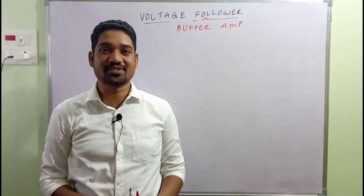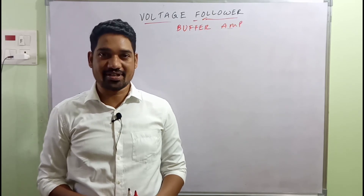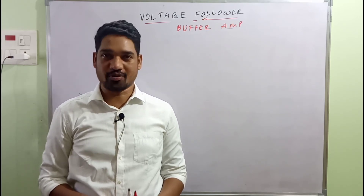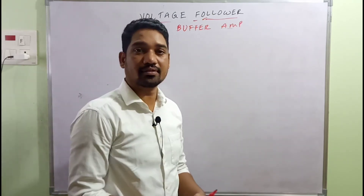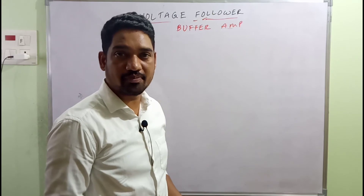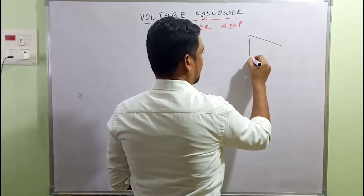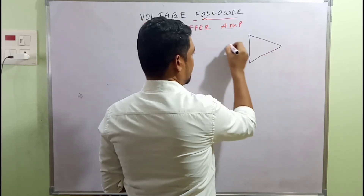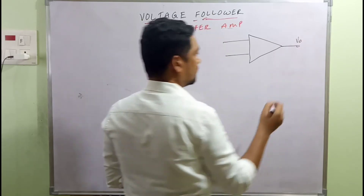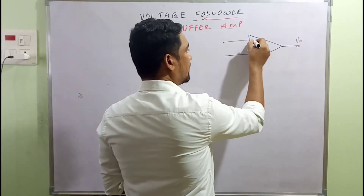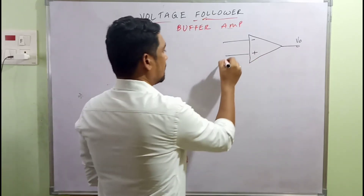Welcome to Shendra's Engineering Tutorials. Today's topic is from operational amplifiers — a topic which cannot be neglected and must be discussed. The circuit symbol of an operational amplifier looks like this: it has two inputs and an output across which we collect the output, one terminal being inverting and the other being non-inverting.